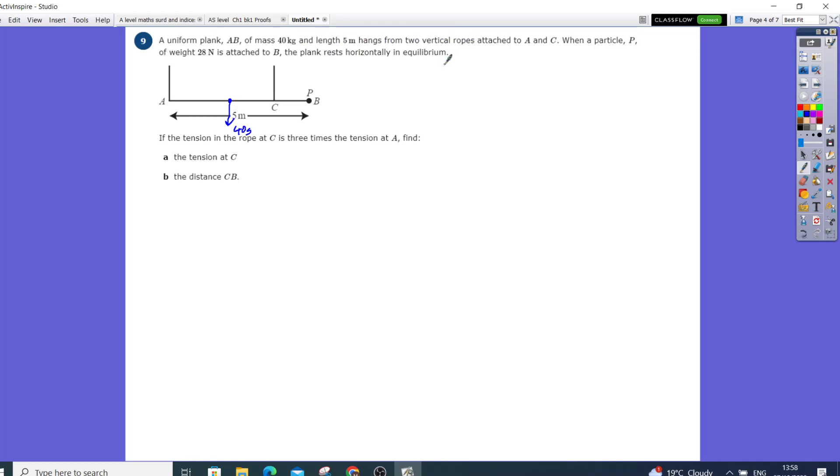It hangs with two vertical ropes - these are the tensions holding it up. This is the tension at C and this is the tension at A. When a particle P of weight 28 newtons is attached to B, so that weight is attached to B, the plank is in equilibrium. So there's a weight attached to B which is going to be 28 newtons.